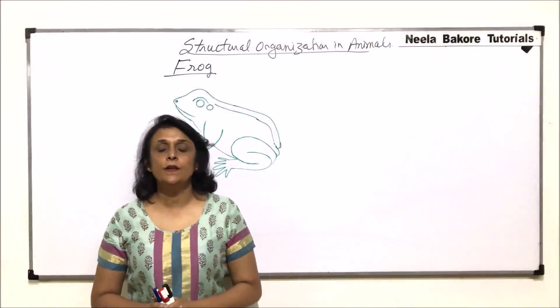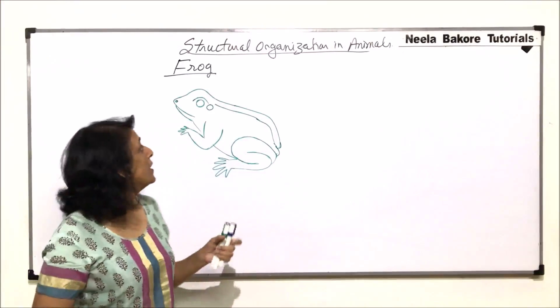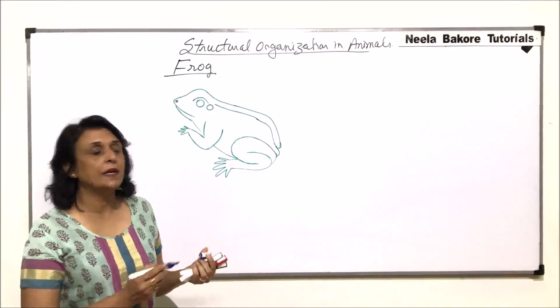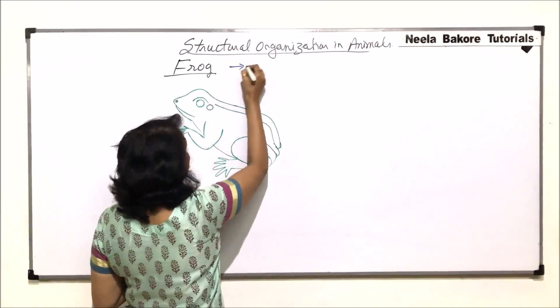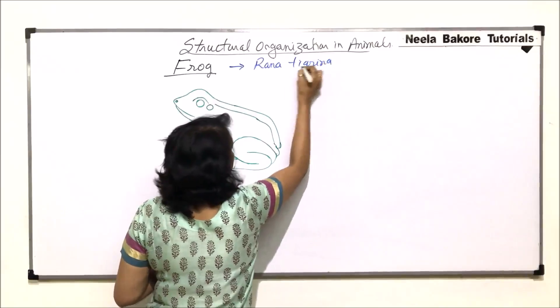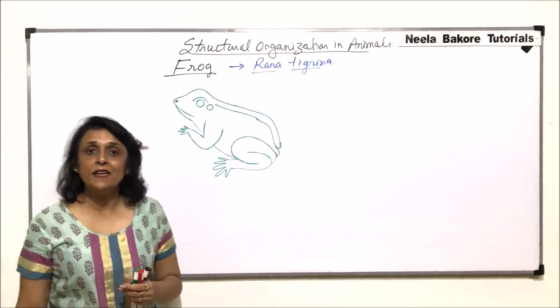We are now starting with the next animal and its structural organization, and the animal is frog. The most common Indian variety that we find is Rana tigrena. So this is the common frog that we find.